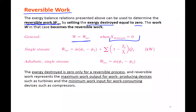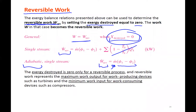X-destroyed is zero, so that cancels and we're just left with work-reversible. If you have an adiabatic system, the heat transfer term goes away, and then you just have mass flow rate and the change in flow exergy for that reversible work — even for a turbine. Work-reversible is what the work of the turbine would be if it were done reversibly from state one to state two. Because X-destroyed is zero, we're saying it's reversible. So the reversible work represents the maximum work for a work-producing device like a turbine, and the minimum work for a work-consuming device like a compressor or pump.